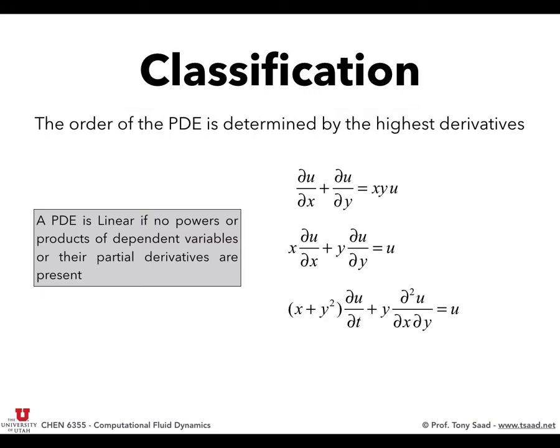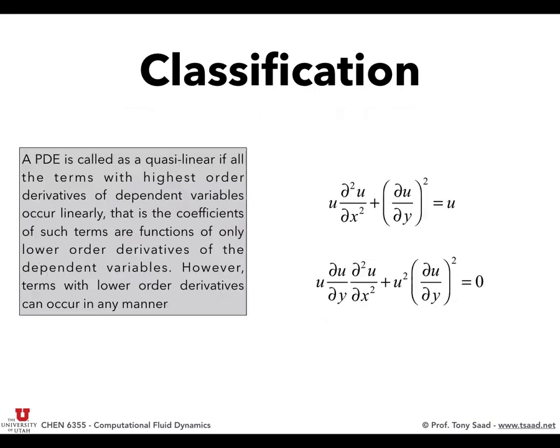Has anyone heard of quasi-linear equations? Quasi-linear equations are actually nonlinear, except that the coefficients of the highest derivatives can only contain terms with lower derivatives. For example, the highest derivative is second order, and its coefficient can only contain lower-order derivatives. But for lower derivatives like du/dy, you can have a square — it is nonlinear, but classified as quasi-linear. In advanced PDE theory this has certain implications, but it's just a classification.